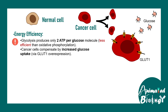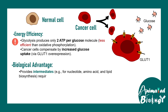The biological advantages are plenty because glycolytic intermediates provide the raw materials for making new nucleotides, amino acids, and lipids. All these raw materials are required for cell division — making new cells — and that is crucial for a rapidly proliferating cell like the cancer cell.